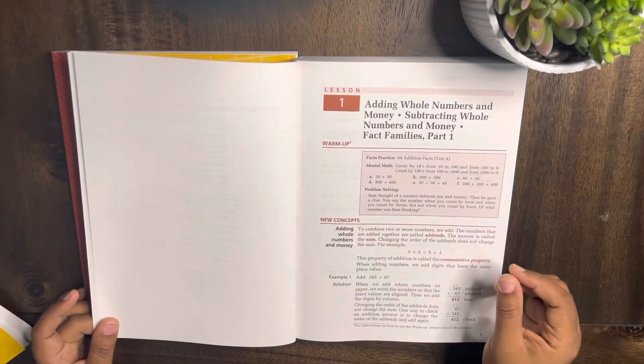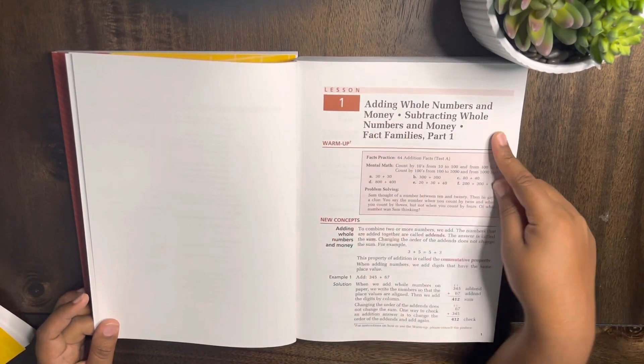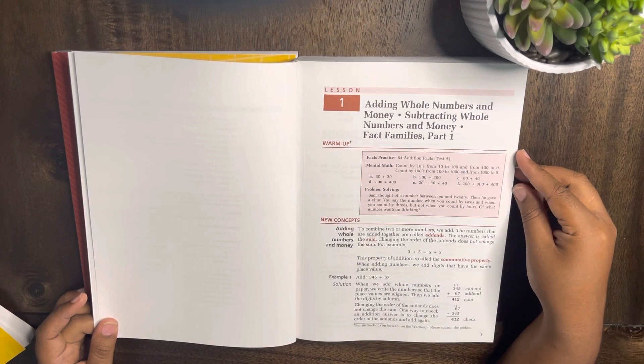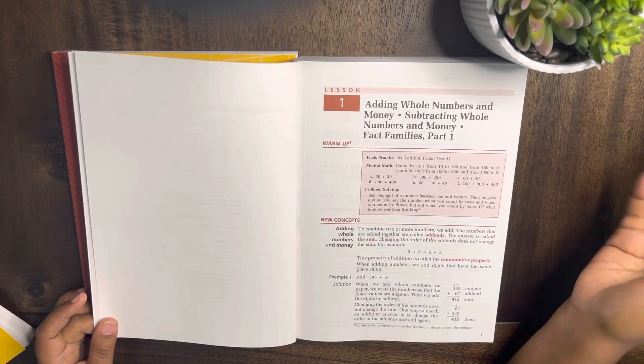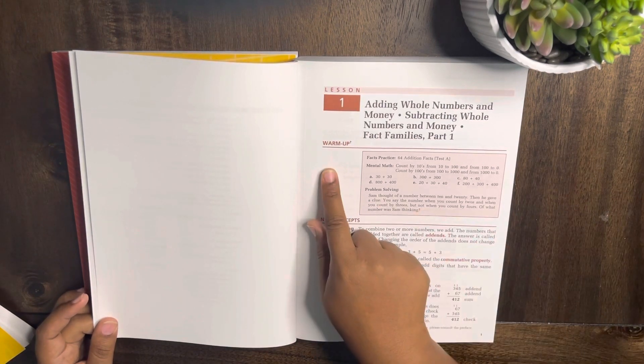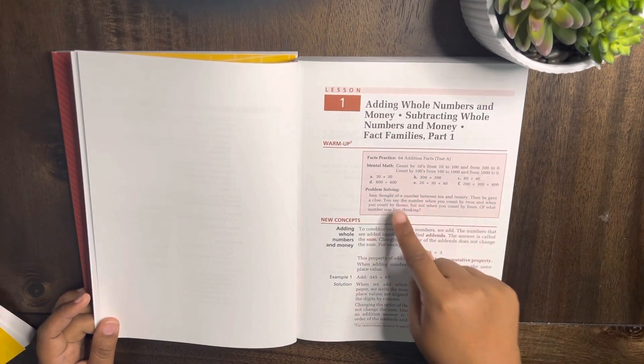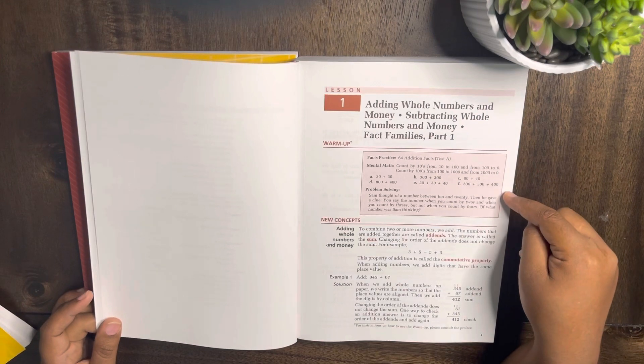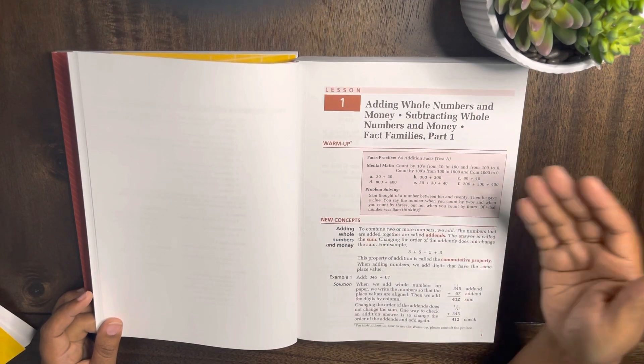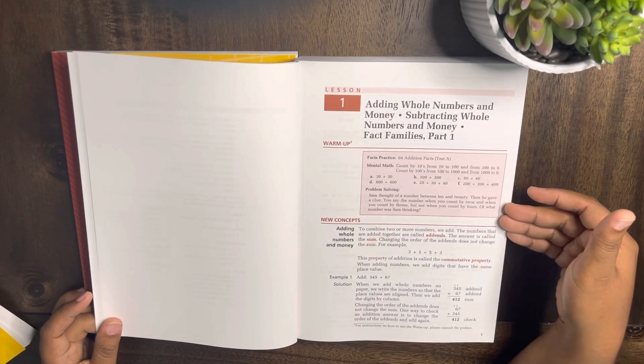Let's go through one lesson. Lesson one: adding whole numbers and money, subtracting whole numbers and money, fact families part one. This is the warmup - it says fact practice, mental math, and problem solving. So you can choose one or choose to do all of them, up to you.